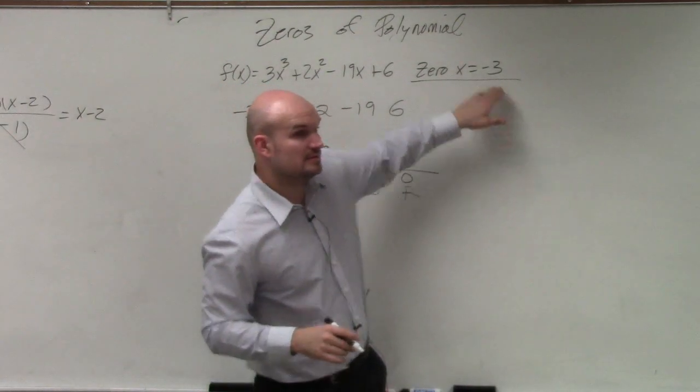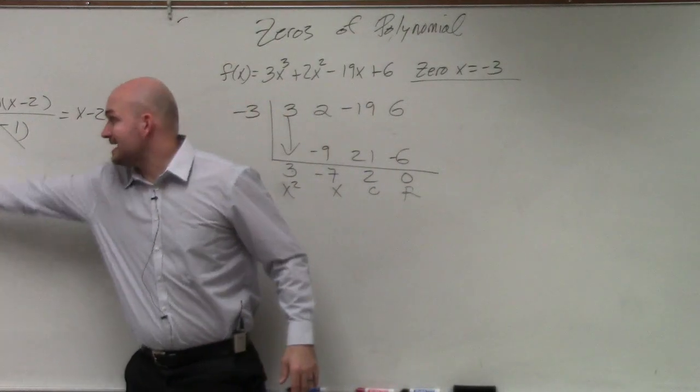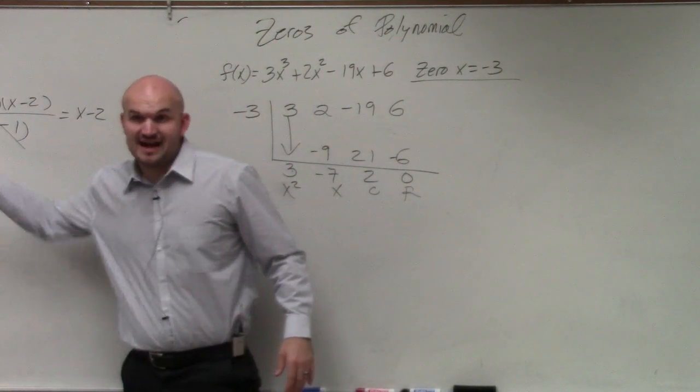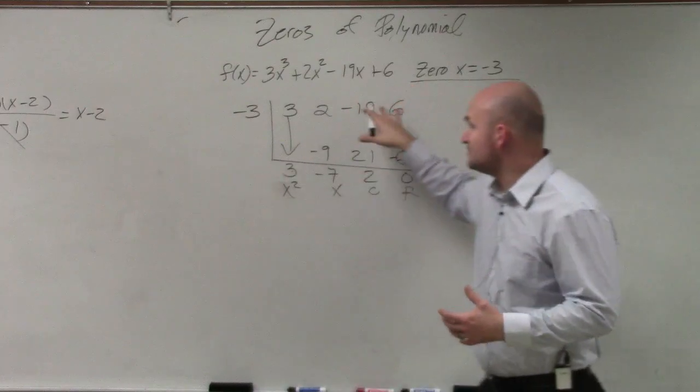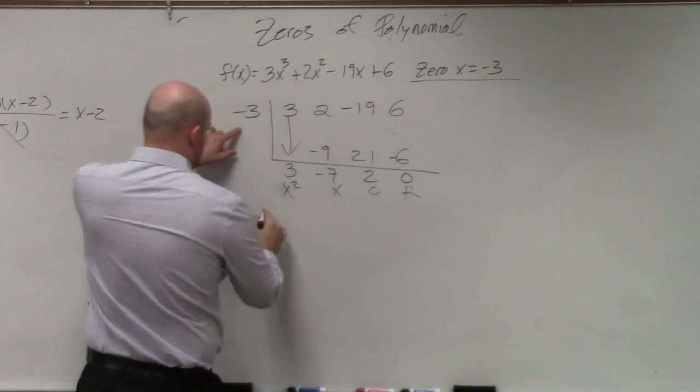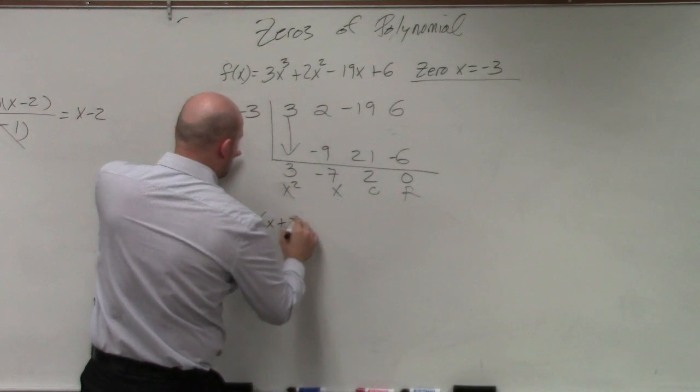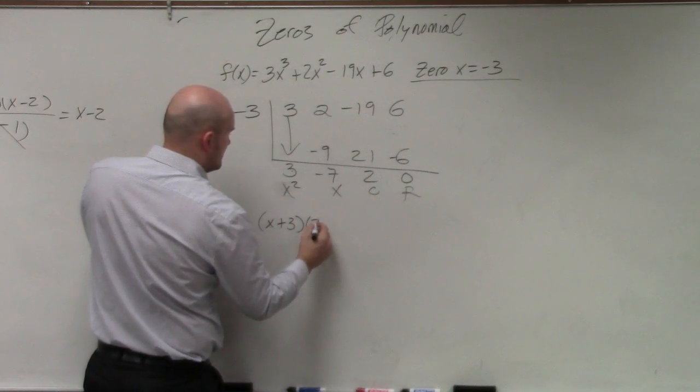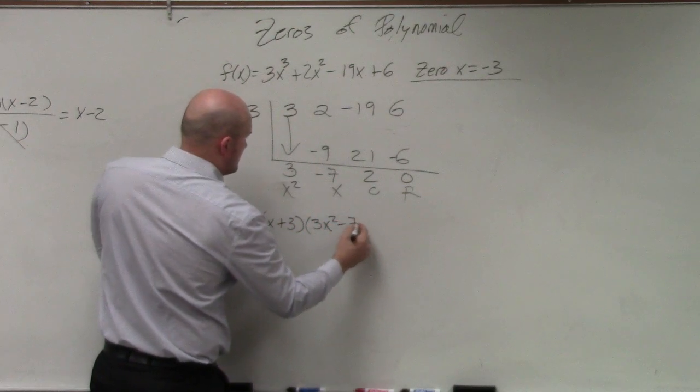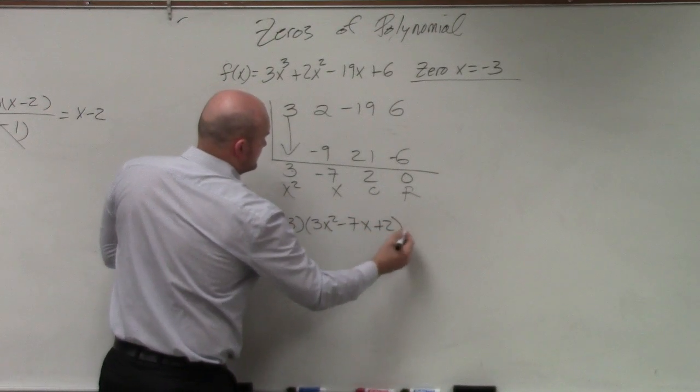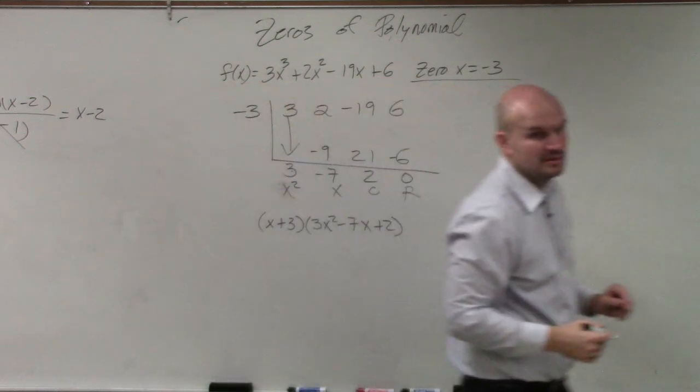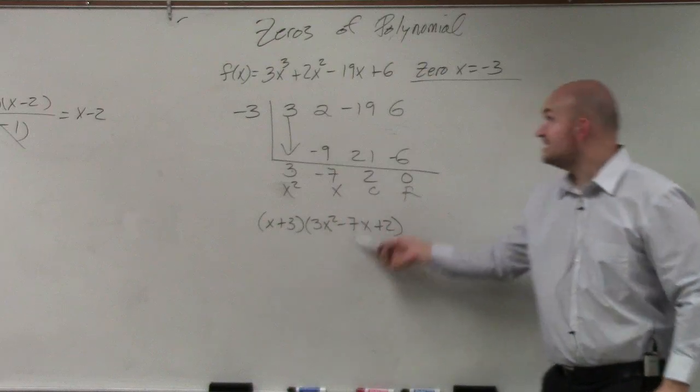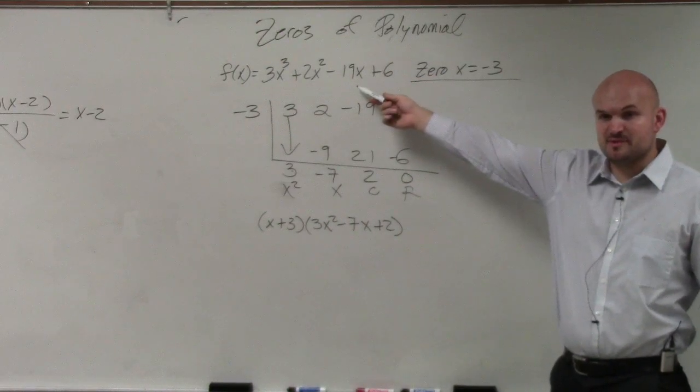So remember, if that's the zero, we can write it as a factor, right? Because the factors multiply to give us this polynomial. So if here's my zero, that means x plus 3 is the factor. And then this is my other factor.